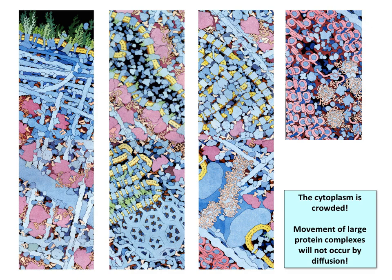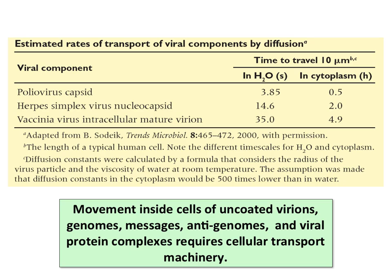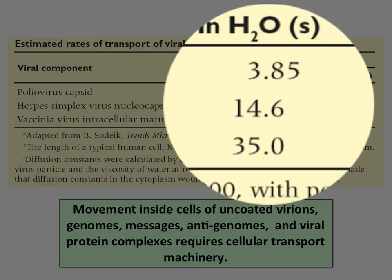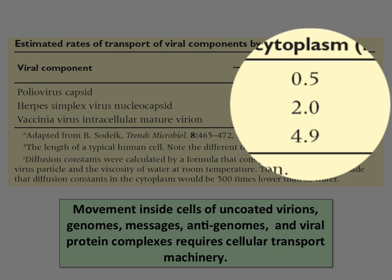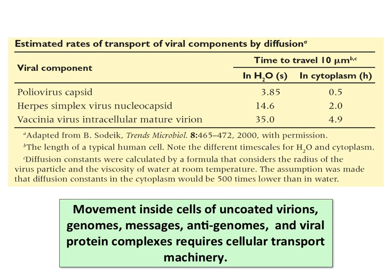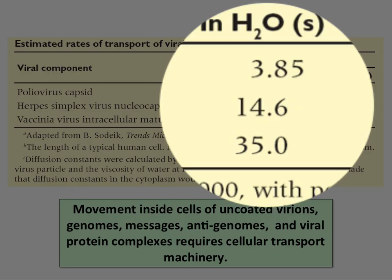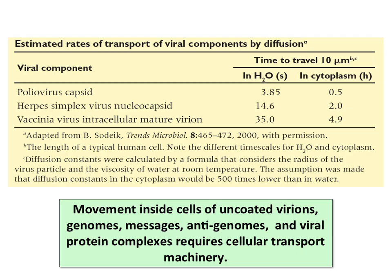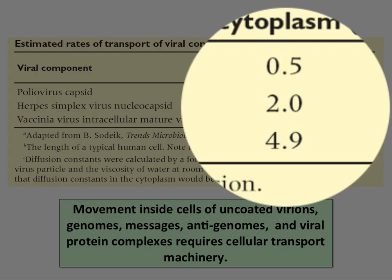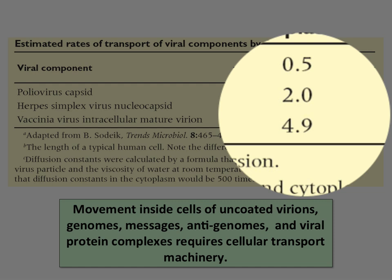Here's a thought experiment to make the point that viruses can't simply diffuse. These are estimated rates of transport in water versus the cytoplasm. The poliovirus capsid would take 3.85 seconds to travel 10 microns in water, but in the cytoplasm — applying a viscosity factor — it would take half an hour. Herpesvirus takes 14 seconds in water but two hours in the cytoplasm. Vaccinia would take five hours to move just 10 microns by diffusion alone.